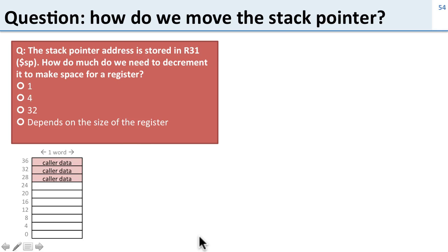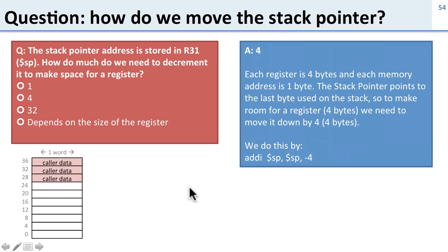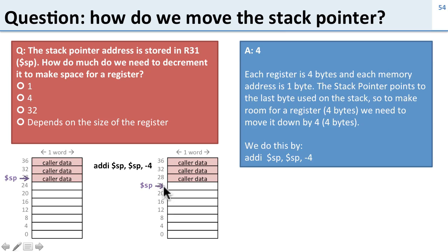So how much do we need to move the stack pointer? The stack pointer address is stored in register 29. How much do we need to decrement it to make space for a register? The answer is four, because each register is four bytes wide and each memory address is one byte. So we subtract four from our stack pointer, which moves it down to point to the next location — we've moved our stack down by one entry.